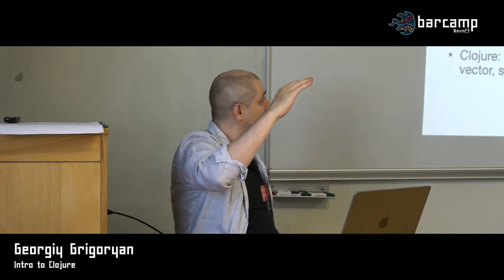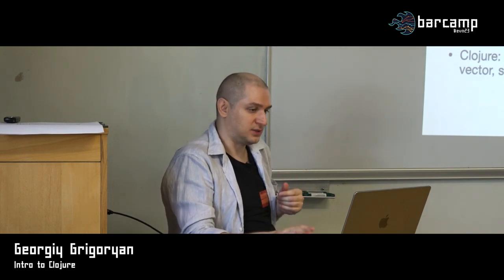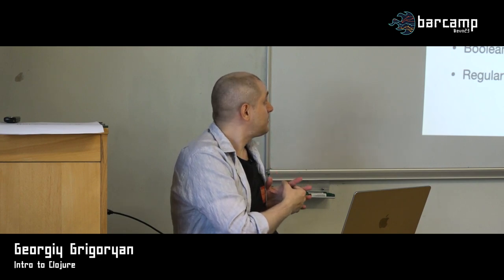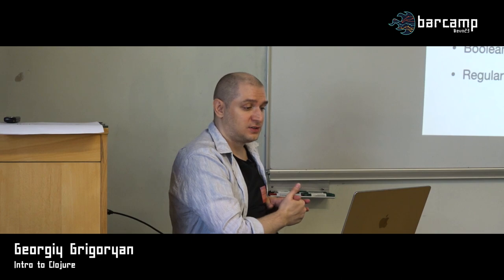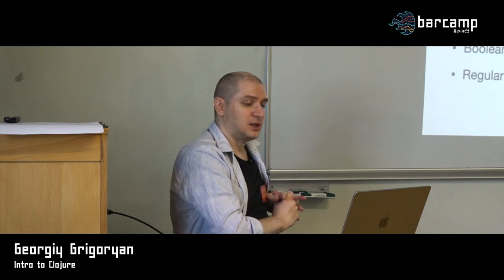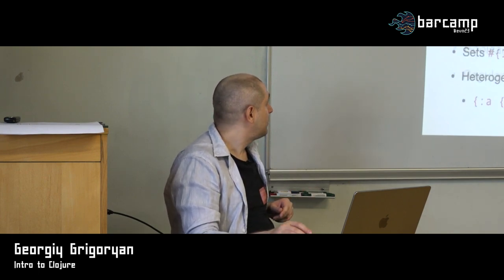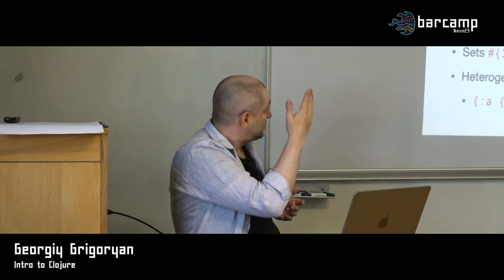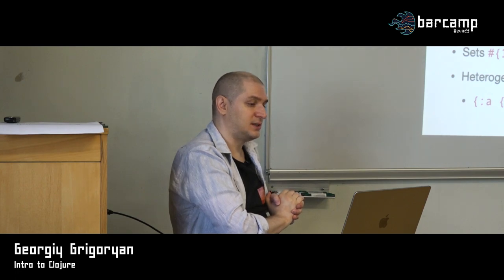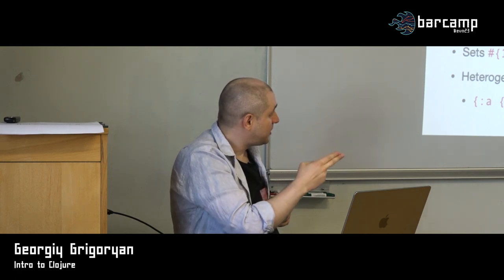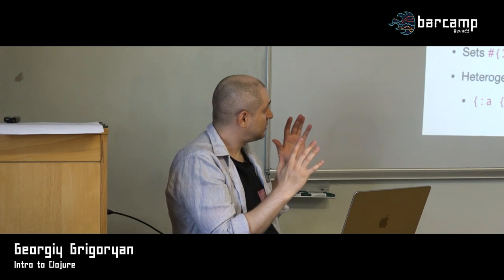In Clojure we have just four primary data structures and a big set of functions that manipulate them — all our programming happens this way instead of using objects. The atomic data types are what you'd expect: different ways to represent numbers, strings, characters, symbols, keywords, booleans, true/false, nil, and regular expressions. Then we have the four primary data structures: a linked list that grows at the front; for example, (list 1 2 3) is a function call returning a list with values 1, 2, 3.